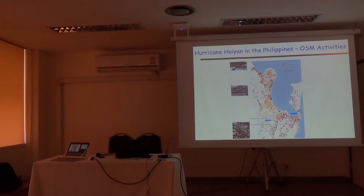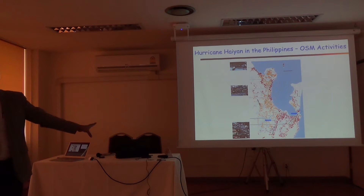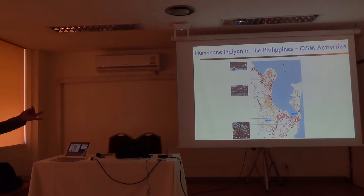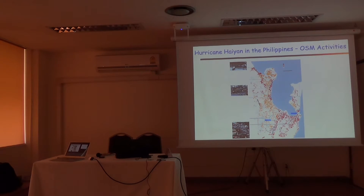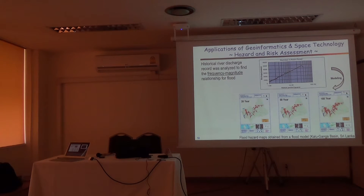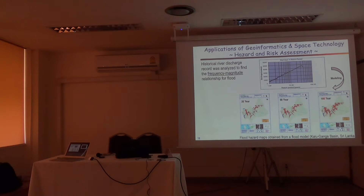After this event, ADB launched a new tactical assistance project, which AIT received. It covers four countries: Armenia, Bangladesh, Philippines, and Fiji — representing Central Asia, South Asia, Southeast Asia, and Pacific regions. We are doing risk assessment in many countries. This is work in Sri Lanka — we have 20-year, 50-year, and 100-year flood maps, all coming from models using river discharge, topography, and related data.